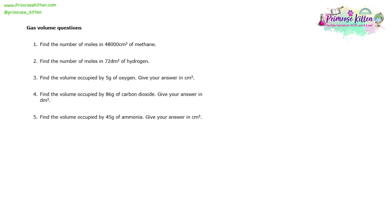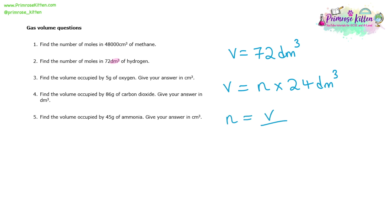The next question asks us to find the number of moles in 72 dm³ of hydrogen. The volume is 72 dm³, so we write down the corresponding equation: volume equals moles times 24 dm³, because the units match. Rearranging gives moles equals volume over 24. Substituting in 72: 72 ÷ 24 equals 3 moles. So the number of moles in 72 dm³ of hydrogen is 3 moles.